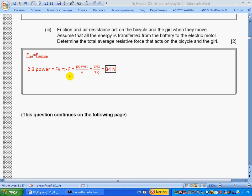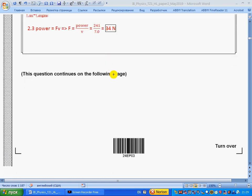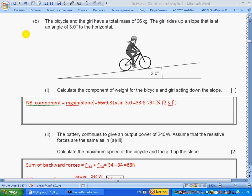Rearranging this formula for force, we get power by speed: 241 divided by 7, so we get 34 newtons. Part b: The bicycle and the girl have a total mass of 66 kilograms. The girl rides up a slope that is at an angle of 3 degrees to horizontal. Calculate the component of weight for the bicycle and girl acting down the slope. Not in the booklet, but it is recommended to memorize: component along the slope equals mg sine angle of the slope, which is 3 degrees. So we get the same value, 34 newtons.